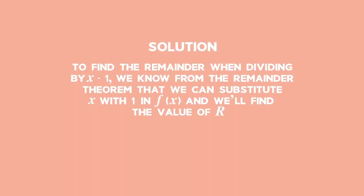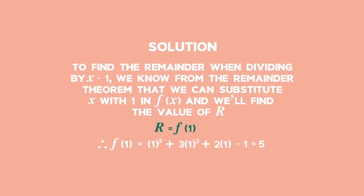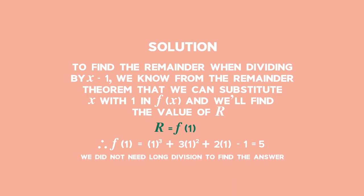Solution. To find the remainder when dividing by x minus 1, we know from the remainder theorem that we can substitute x with 1 in f of x to find r. Therefore, f of 1 equals 1 cubed plus 3 times 1 squared plus 2 times 1 minus 1, which is equal to 5. We didn't need long division to find the answer.